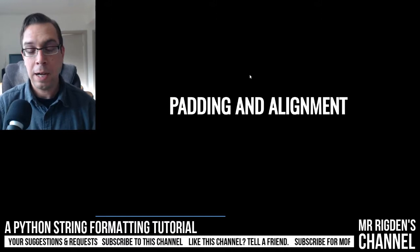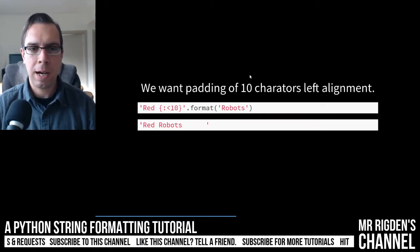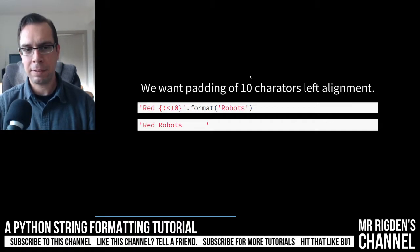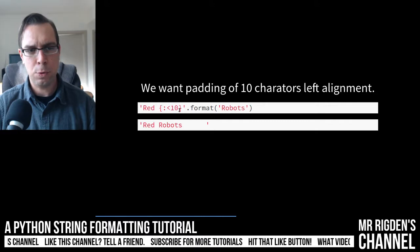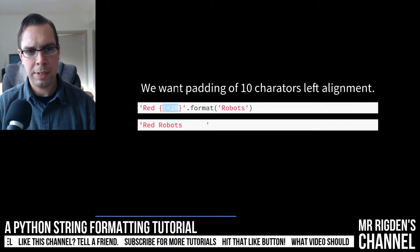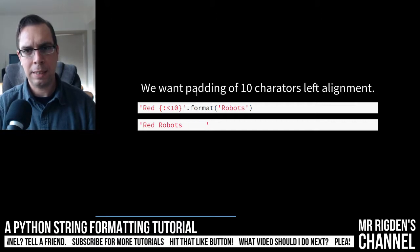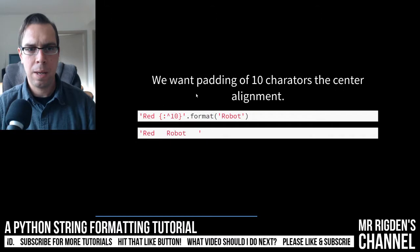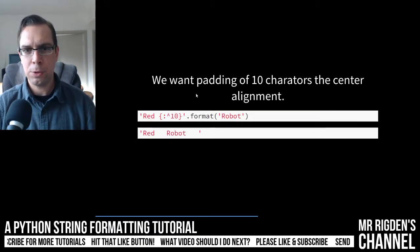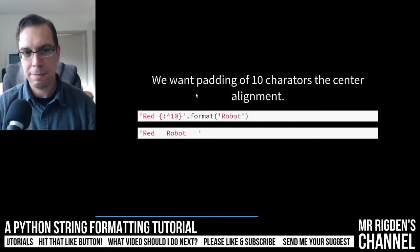Okay. Another cool thing to do is padding and alignment. So we want a padding of 10 characters on left alignment. See, we've got the same brackets with some new parameters in here. So that's going to say that we want the padding here. And we want left aligned. Do the same thing with the right aligned. You can also center align it. So very, very nifty.